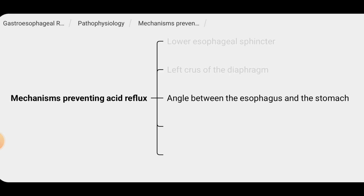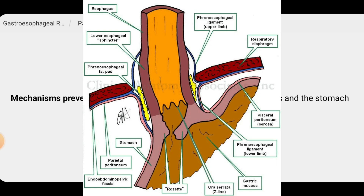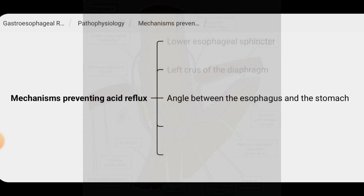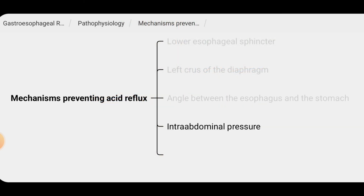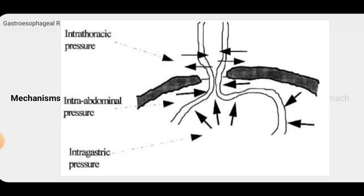The angle of the esophagus as it enters the stomach, sometimes called the angle of His, also helps to prevent acid reflux. Additionally, intra-abdominal pressure, when increased, helps to compress the stomach and force the contents downwards, which can help to keep the lower esophageal sphincter closed and prevent stomach acid from flowing back into the esophagus.